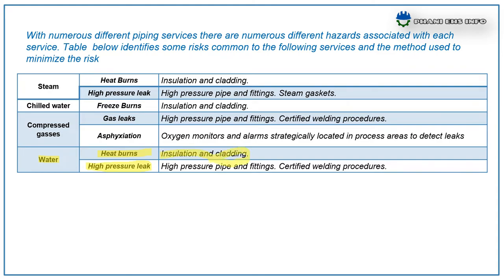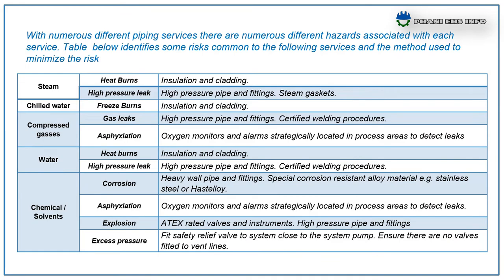For chemical or solvent lines, the possible hazards are corrosion, asphyxiation, explosion, excess pressure, etc. Control measures include heavy-duty valve pipe fittings, special corrosion-resistant alloy materials such as stainless steel or Hastelloy, oxygen monitors and alarms strategically located in process areas to detect leaks, 8x rated valves and instruments, high pressure pipes and fittings, safety relief valves, and ensuring vent lines are properly fitted.